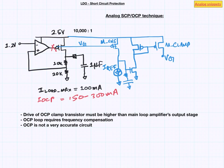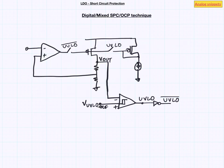Now let's look at the digital or mixed signal short circuit protection techniques. In this technique, we have an under voltage lockout or UVLO comparator on LDO output. If LDO output is less than a predefined threshold then the output of this comparator is high otherwise it is low. Now if UVLO output is high that means Vout is lower than a certain threshold then we disable the main loop.